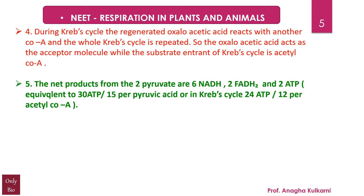The net products from 2 pyruvate are 6 NADH, 2 FADH2, and 2 ATP, which is equivalent to 30 ATP, or 15 per pyruvic acid. In the Krebs cycle specifically, it is 24 ATP, or 12 per acetyl coenzyme A.